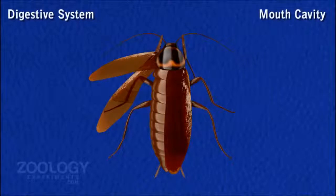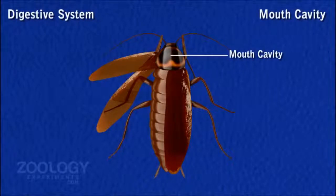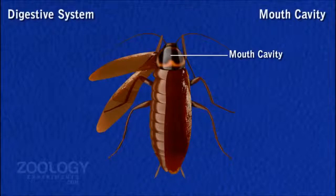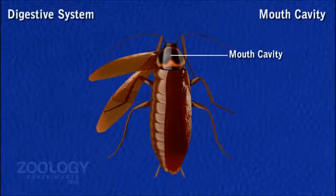Mouth Cavity: Mouth cavity is a small indefinable space outside the mouth which is surrounded by mouth parts. The hypopharynx divides the pre-oral cavity into a posterior part called salivarium, into which the common salivary duct opens, and an anterior part which leads towards the mouth as a narrow food passage. Food is crushed and acted upon by salivary secretion in the mouth cavity.